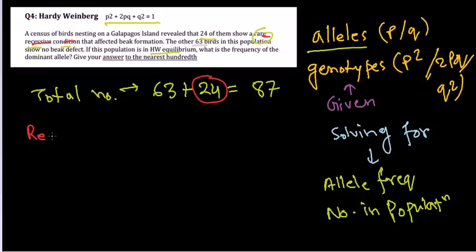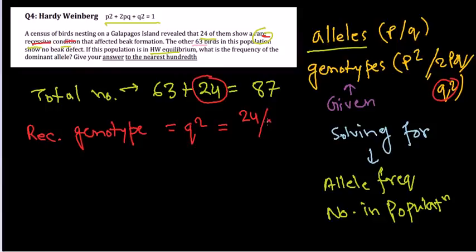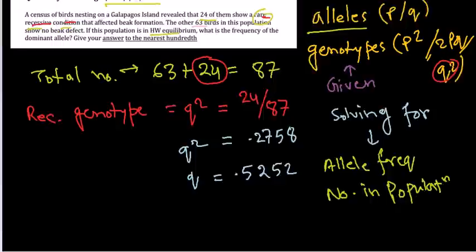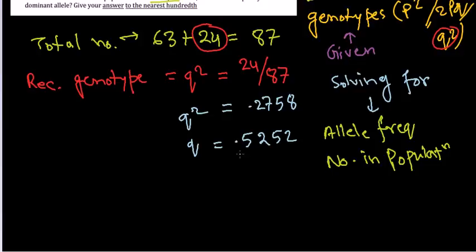Since the condition is recessive, those 24 birds represent the recessive genotype q². So q² = 24/87 = 0.2758. Taking the square root, q = 0.5252. We now have the value of q.